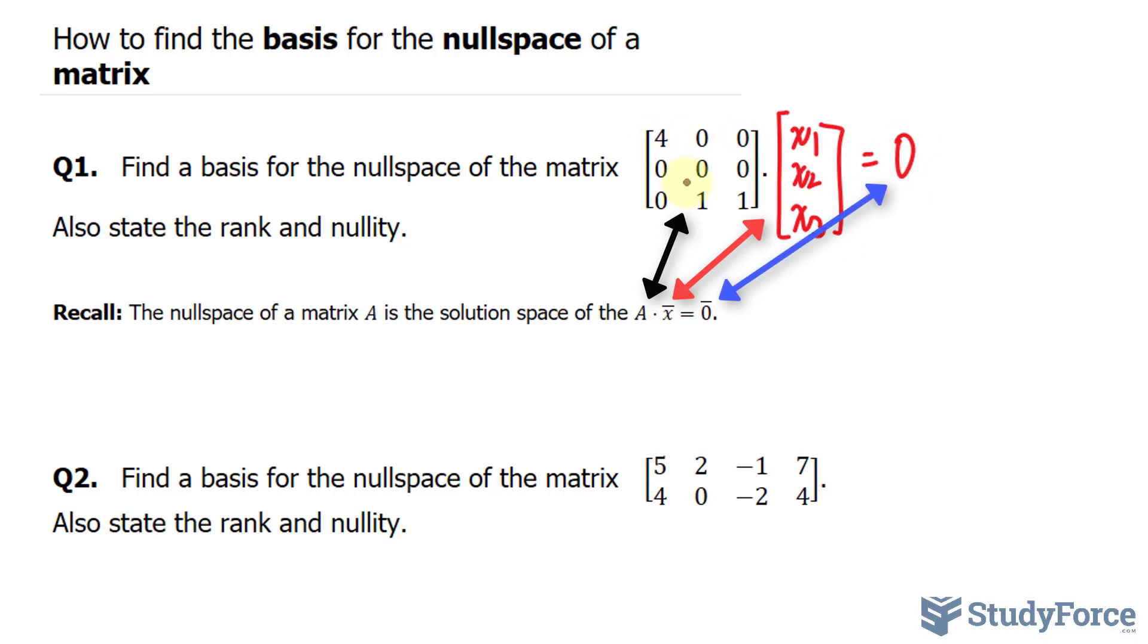In other words, I want you to think of each of these rows as if they're an equation represented by the variables x sub one, x sub two, and x sub three, and each of these rows is equal to zero.